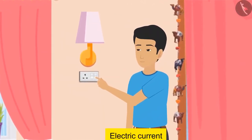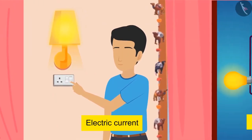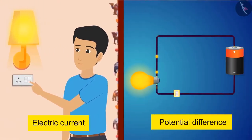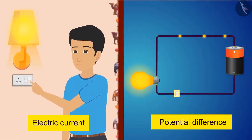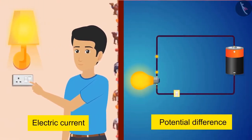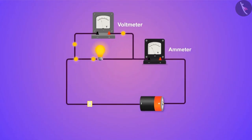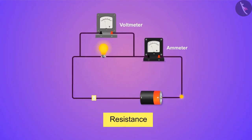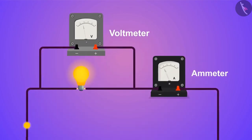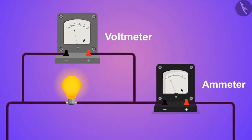With the help of Ohm's law, we have come to know a very beautiful relation between potential difference and electric current. We got to know about the ratio of these two quantities, which is known as resistance. We have also seen what effect resistance has on the circuit.